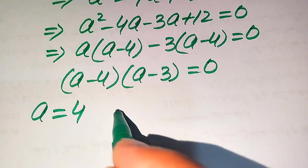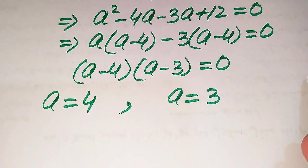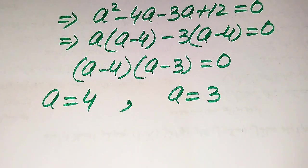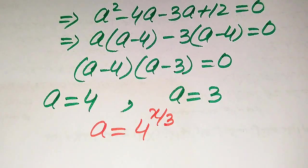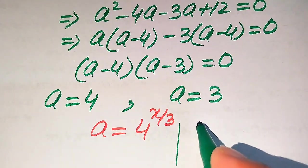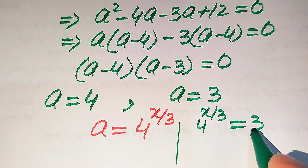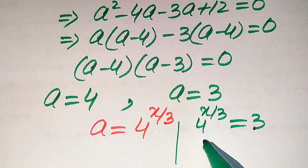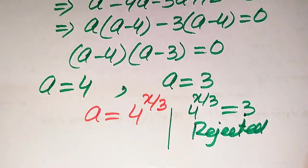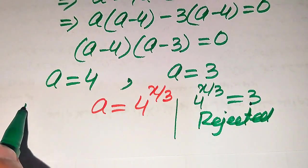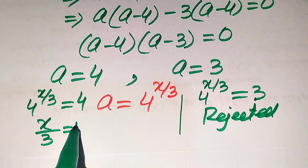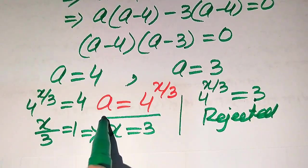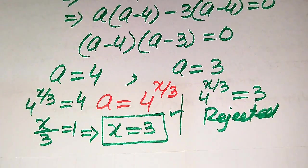Recall from the start that a equals 4 to the power of x over 3. If a equals 3, then 4^(x/3) equals 3, which does not yield an integer solution, so we reject this case. If a equals 4, then 4^(x/3) equals 4. Comparing both sides, x over 3 equals 1, which implies x equals 3. So x equals 3 is the positive integer solution of the given equation. Thank you so much for watching this video — please subscribe to my channel for more exciting videos.